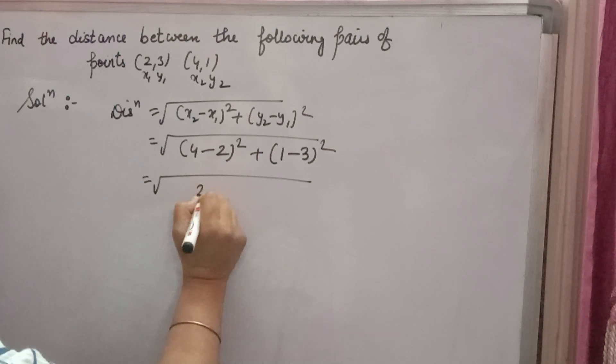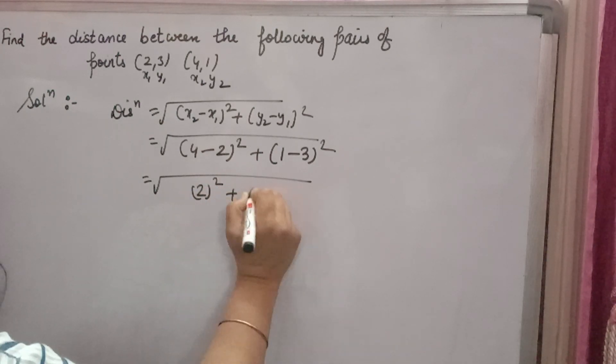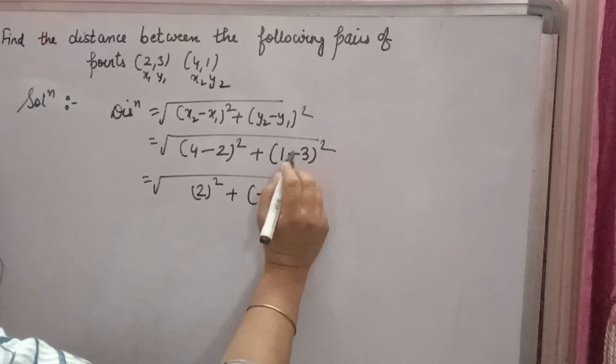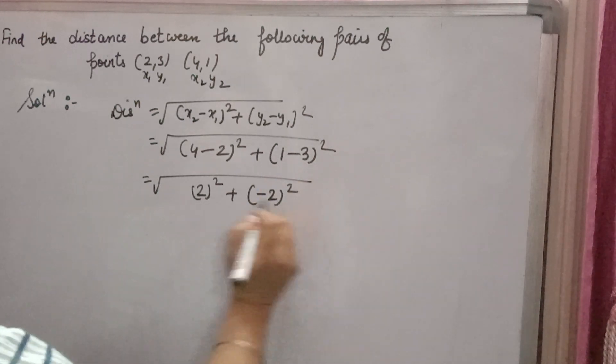Now 4 minus 2 is 2, so 2 square. 1 minus 3 is minus 2, because 1 is positive and 3 is negative. So you will subtract and sign of the bigger one will come.